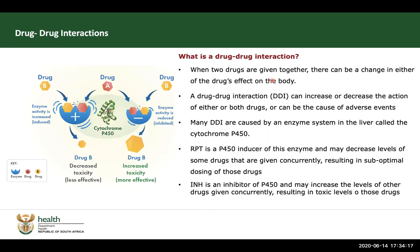When two drugs are given together, there can be a change in either of the drug's effect on the body. This is a nice diagram depicting a common drug-drug interaction in the liver for drugs that are metabolized through the P450 cytochrome system. You have drug B and drug A, which both have some level of effect on this specific enzyme.